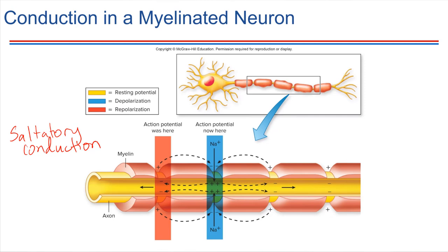There are a couple of other things that can influence conduction speed as well. Literally the size of the axon — the diameter of the neuron. If you have an axon with a very small diameter, it just doesn't allow very much space for ions to move and diffuse, so signals tend to propagate a little more slowly. But if you have a nice big thick axon with a large diameter, signals tend to transmit more quickly.